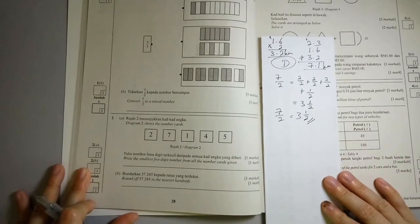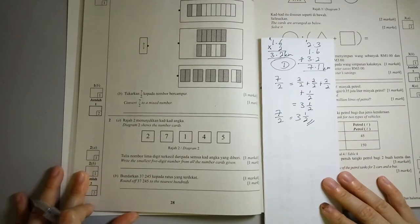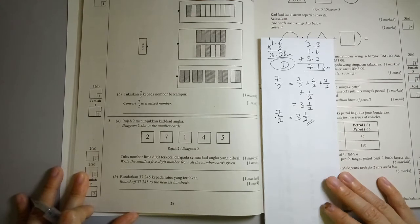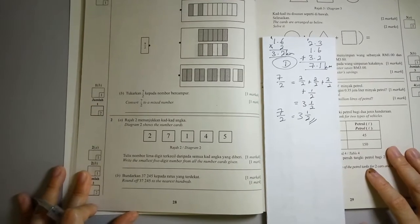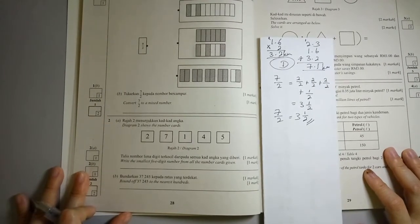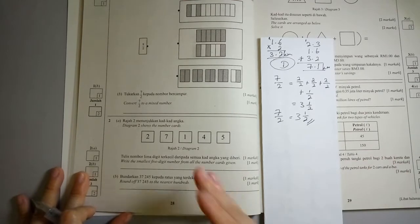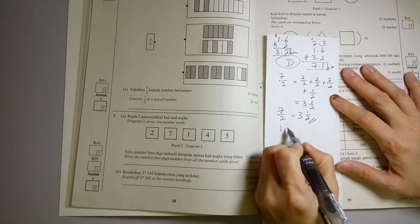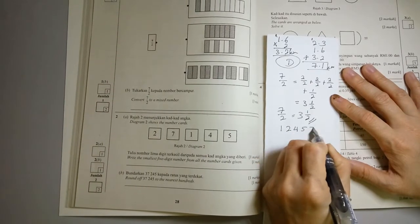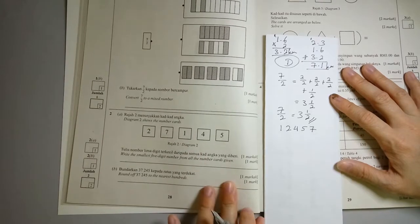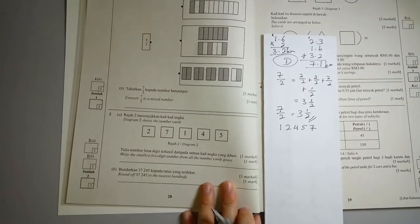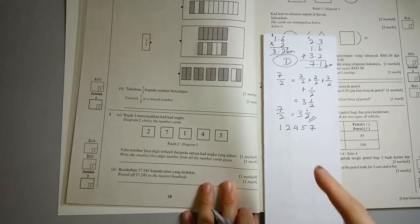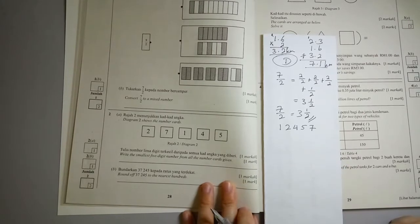Now question 2. Diagram 2 shows the number cards. The smallest 5-digit number from all the number cards given. So what they mean is you can only use the card once. So smallest 5-digit number, you put them from smallest to biggest. So that would be 1, 2, 4, 5 and 7. They did not say whether do they want it to be even or odd. They only want the smallest 5-digit number. So that would be the answer, 12,457.